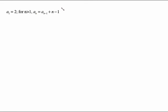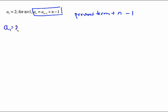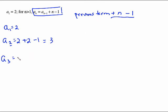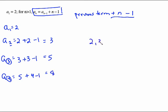For a more complex recursive formula, a sub n equals a sub n minus 1 plus n minus 1, with a sub 1 equals 2: write out what it means — take the previous term, add n, then subtract 1. A sub 1 is 2. A sub 2: previous term is 2, add n (which is 2), minus 1: 2 plus 2 minus 1 is 3. A sub 3: previous term is 3, add n (which is 3), minus 1: 3 plus 3 minus 1 is 5. A sub 4: previous term is 5, add 4, minus 1 is 8. So the sequence is 2, 3, 5, 8.